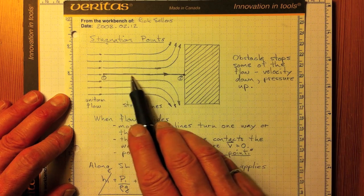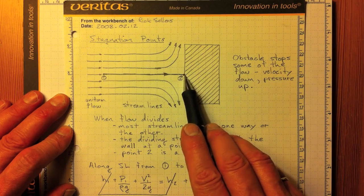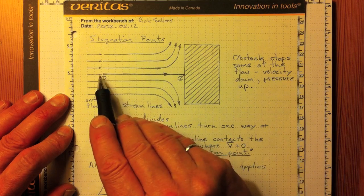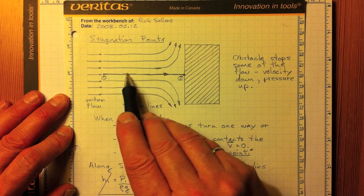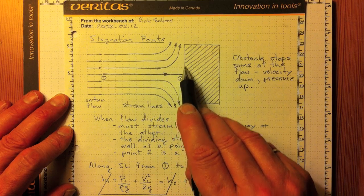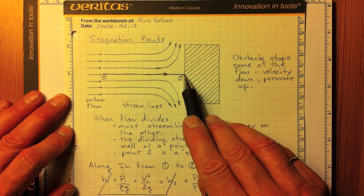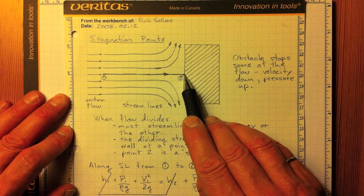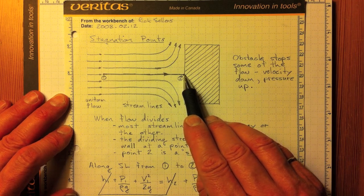The one right in the middle will go straight in and make contact with the block. So any particles coming along just beside this streamline come in here and come almost to a stop and then go out along the block like that. So the velocity here is zero. That's what makes it a stagnation point.